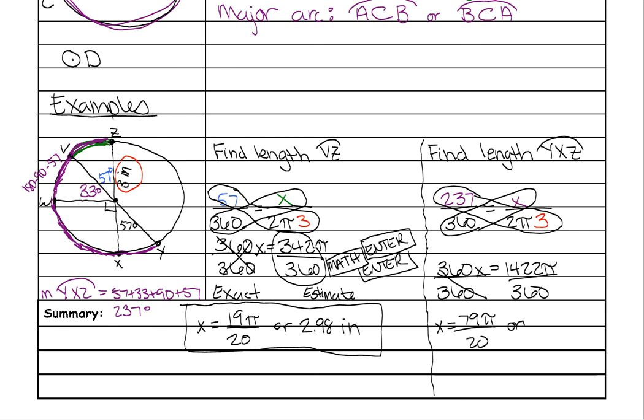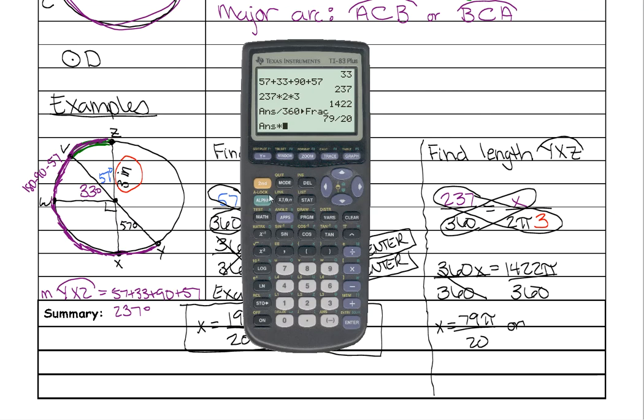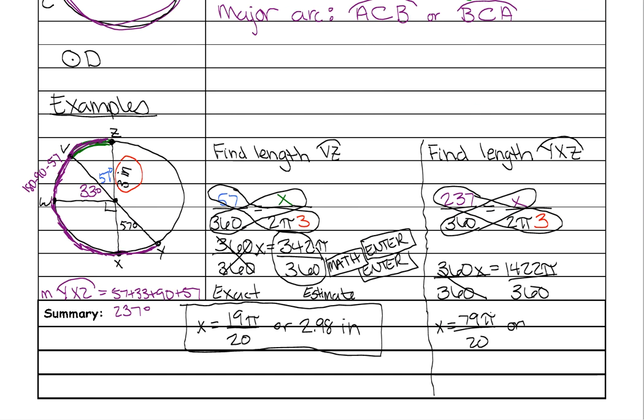X is 79π over 20. Or, and then you need to multiply that answer times pi, which is 12.41. 12.41, what? Inches. And we are done.